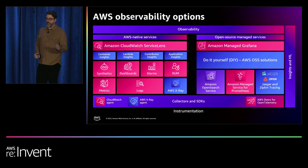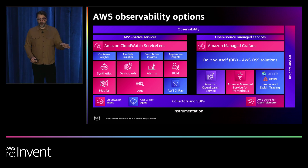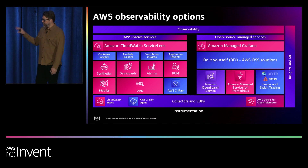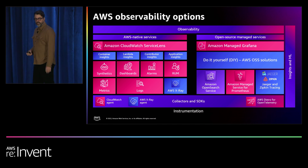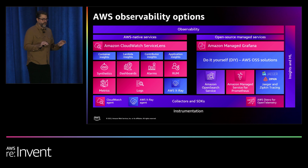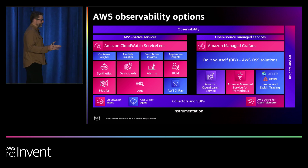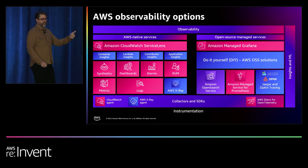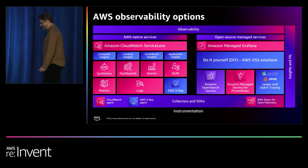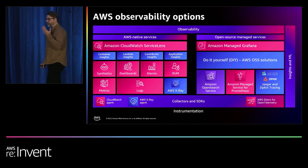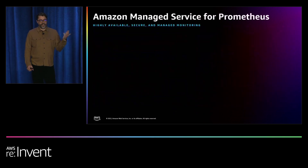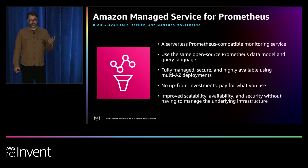We have Amazon Managed Grafana for visualization, OpenSearch for log analytics, and Amazon Managed Prometheus for metrics and alerting. For our managed open-source offerings, we strive to bring all the things you love about AWS services — high availability, scalability, pay-per-use, easy metered billing — as well as what you love about open-source: transparency, interoperability, and the amazing communities that build this stuff together.